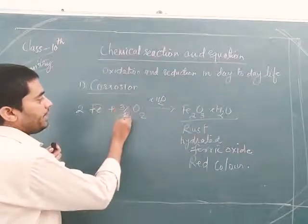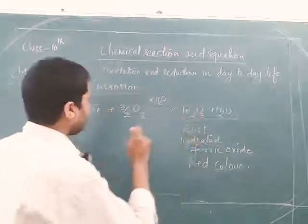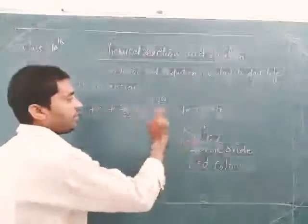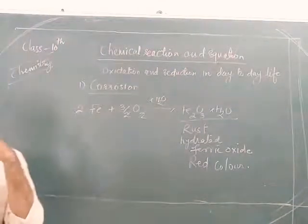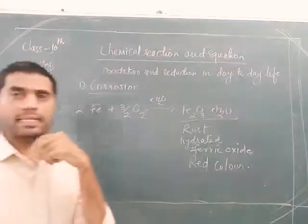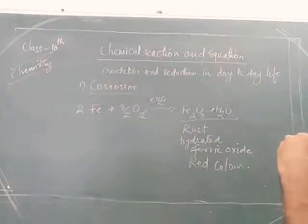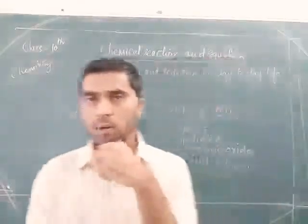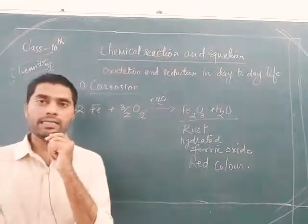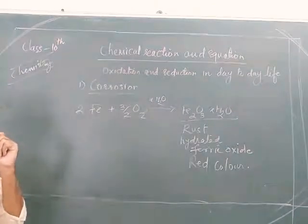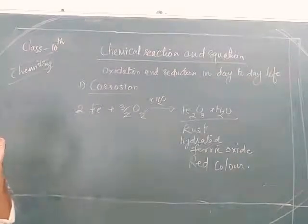We write oxygen as 3/2 O₂. The two denominators cancel and we get 3 oxygens, because we need 3 oxygens to combine with 2 irons. By this chemical reaction we can say that corrosion is the deterioration of metals — in corrosion, metal loses its luster, its shine, and its actual nature, as metals are eaten up by atmospheric gases and moisture.